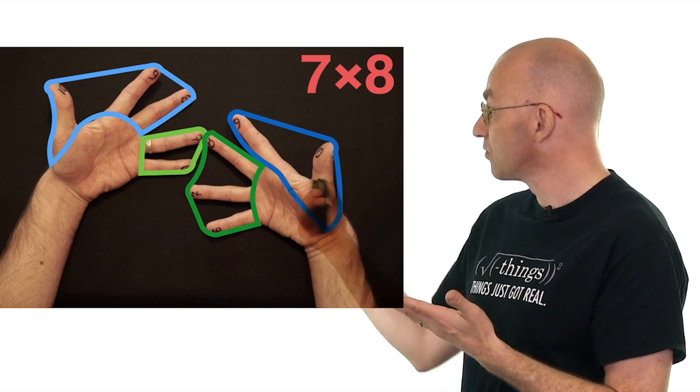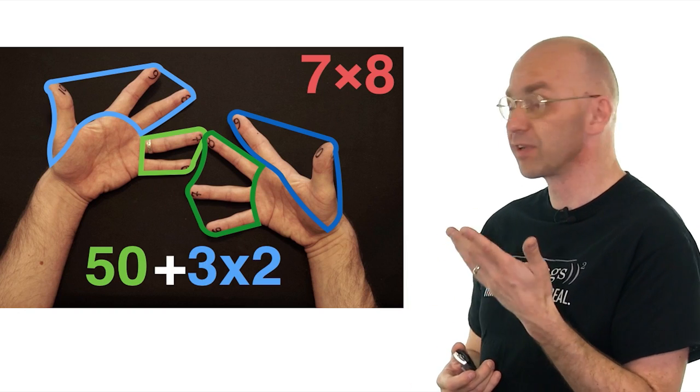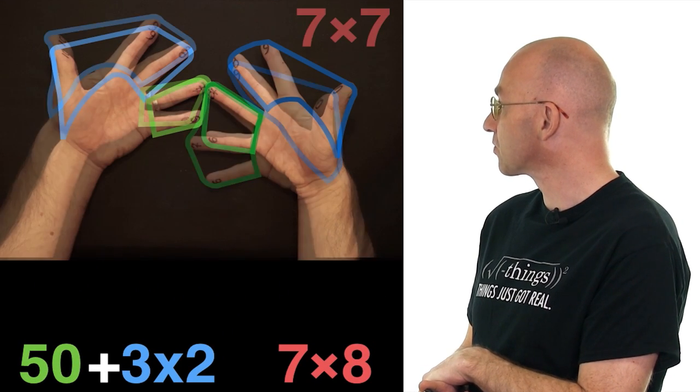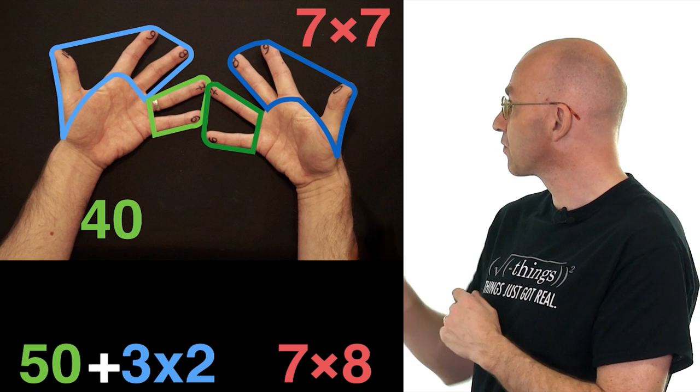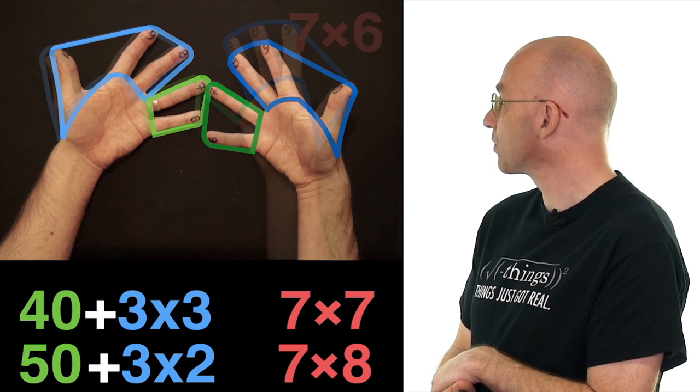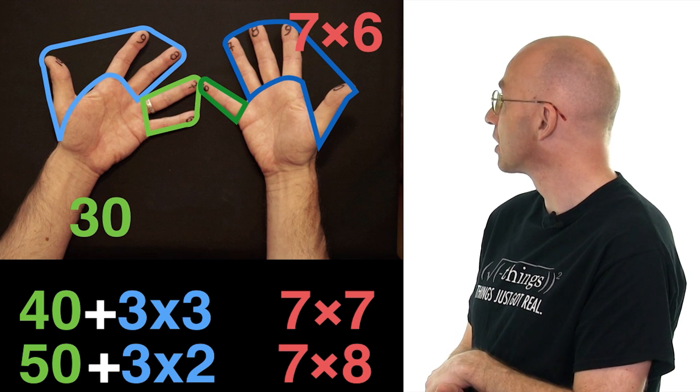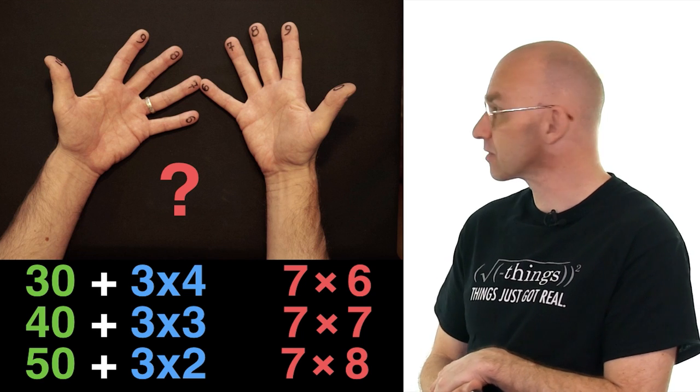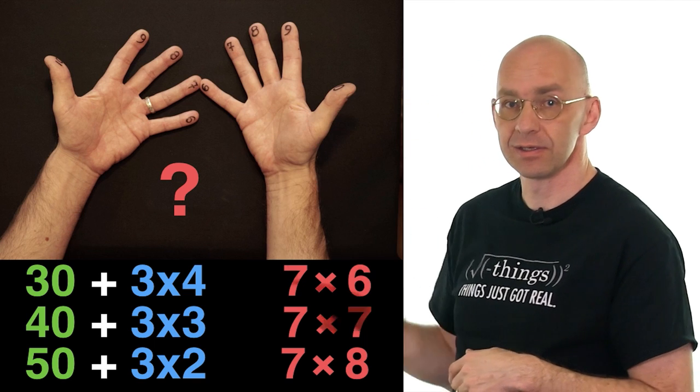So again, we've already had this one. We've got 5 fingers down here. So that's a 50. And on top we've got 3 times 2. And I'm actually going to write down 3 times 2 for what I have in mind. So let's just store this away. Now we're going to go to the next one, which is 7 times 7. So we've got 4 here. That means it's 40. And then we've got on top 3 times 3. Next one is 7 times 6. Now we've got 30. And we've got 3 times 4. So we also note this one down. Now the question is what comes next? So what we've just done is we've taken this finger here, the 7 finger, and touched it to the 8, the 7, the 6. And what comes next?